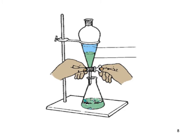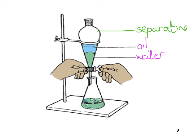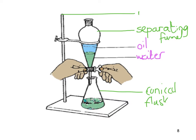In a test or an exam, I could give you diagrams of various equipment that you'd have to label. If this were oil and water, you should know that oil floats on water, so oil is at the top and water at the bottom. You may also be asked to label the apparatus: the separating funnel, the conical flask, the retort stand, and the ring boss head — though you don't really need to know that last one.